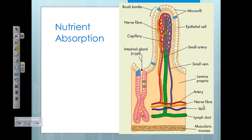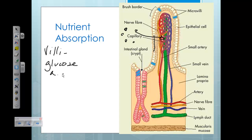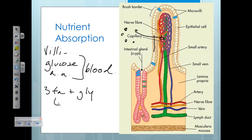Let's quickly review nutrient absorption. We should be familiar with the structure of the villus from our assignments. Nutrients move from the lumen, cross the layer of epithelial cells, and are absorbed. Glucose and amino acids move into the blood of the capillaries. The subunits from fat — three fatty acids and glycerol — move into the lymphatic system via the lacteal, shown by the green structure in this diagram.